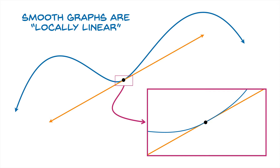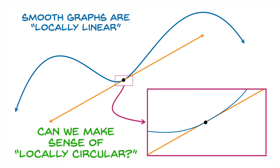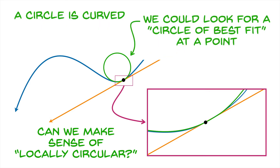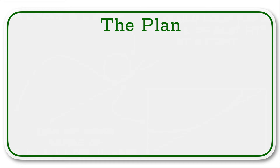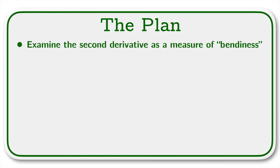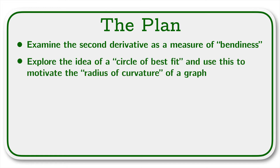This is essentially what differentiability is all about. And now we'd like to ask: is there any way for us to make sense of what it would mean for a graph to look like a circle near a point? We might even be able to look for a circle of best fit. So here's the plan: we're going to examine the second derivative as a measure of bendiness, and we're going to explore the idea of a circle of best fit and use this to motivate the radius of curvature of a graph.